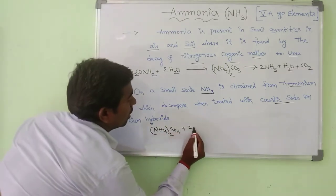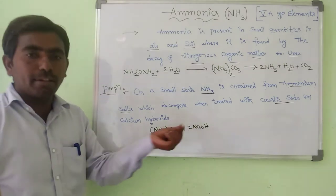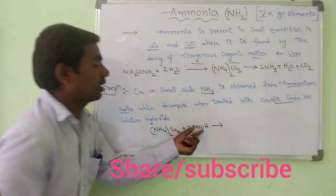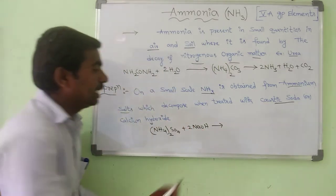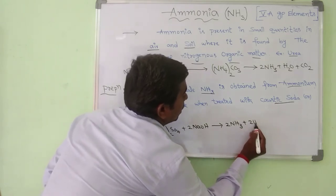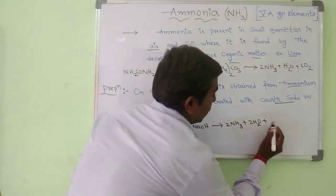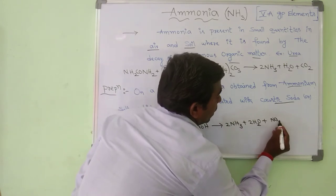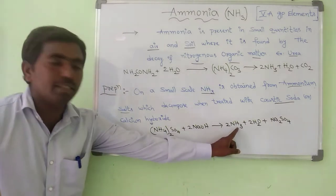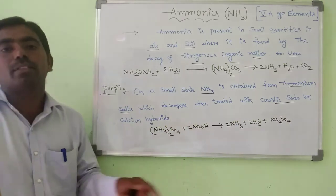Now, to this I am adding caustic soda — sodium hydroxide, generally known as caustic soda. When the ammonium salt is treated with caustic soda, it decomposes into ammonia. In this reaction, other compounds are also obtained: water molecules and Na₂SO₄. In this way, ammonia is obtained when ammonium salts are treated with caustic soda.